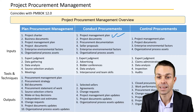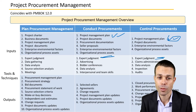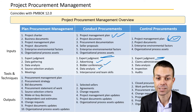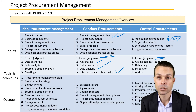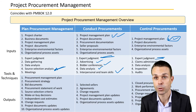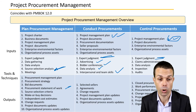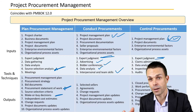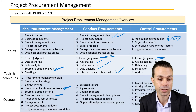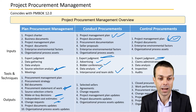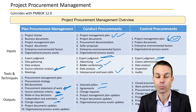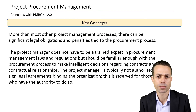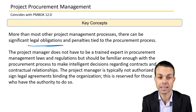There are many inputs, tools, techniques, and outputs. The project management plan is one of the key documents, and expert judgment is one of our key tools and techniques. We'll also see things like advertising, bidder conferences, data analysis, team skills, and source selection analysis — which is a new one in procurement management. Outputs include the procurement statement of work, make-or-buy decisions, independent cost estimates, change requests, source selection criteria, agreements, and selected sellers.